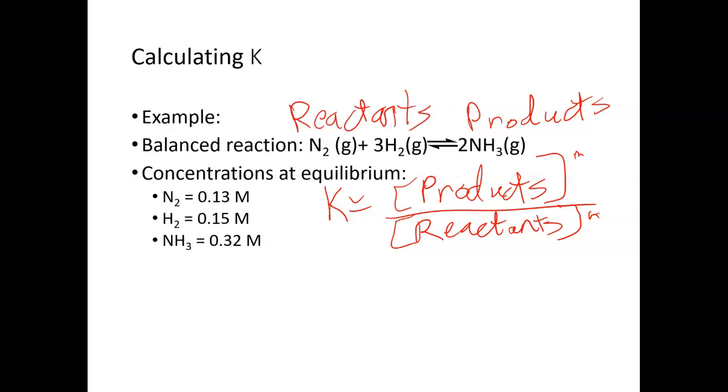So what we are going to do is we need to determine our K equation. Our products are NH3, so we have NH3 in brackets. Notice the coefficient here is 2, so that's going to become our exponent. So it's going to be the concentration of ammonia squared.